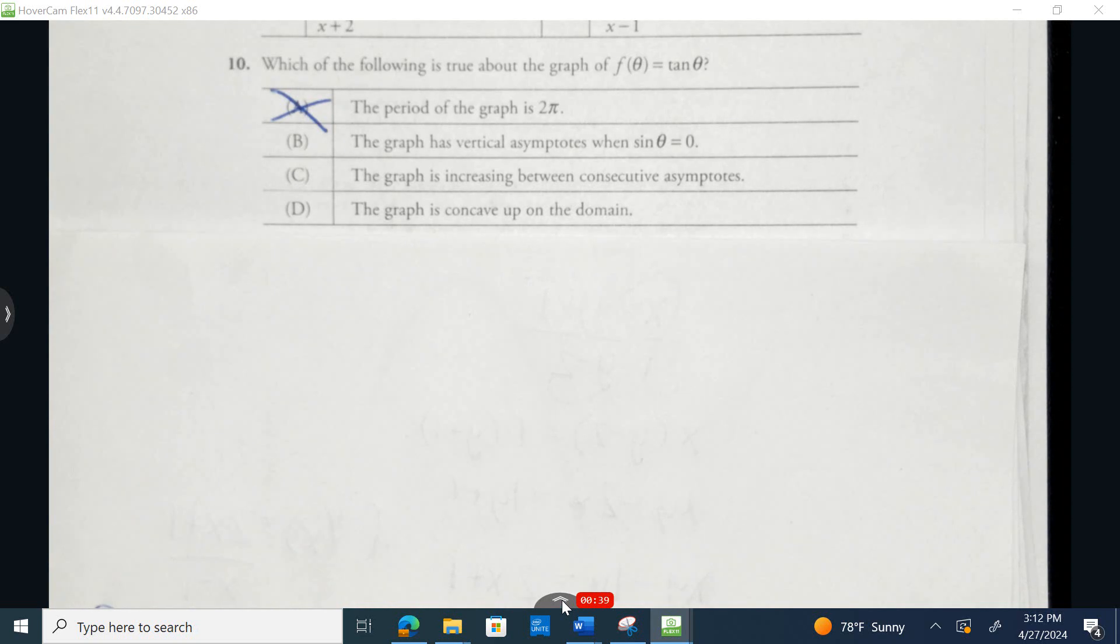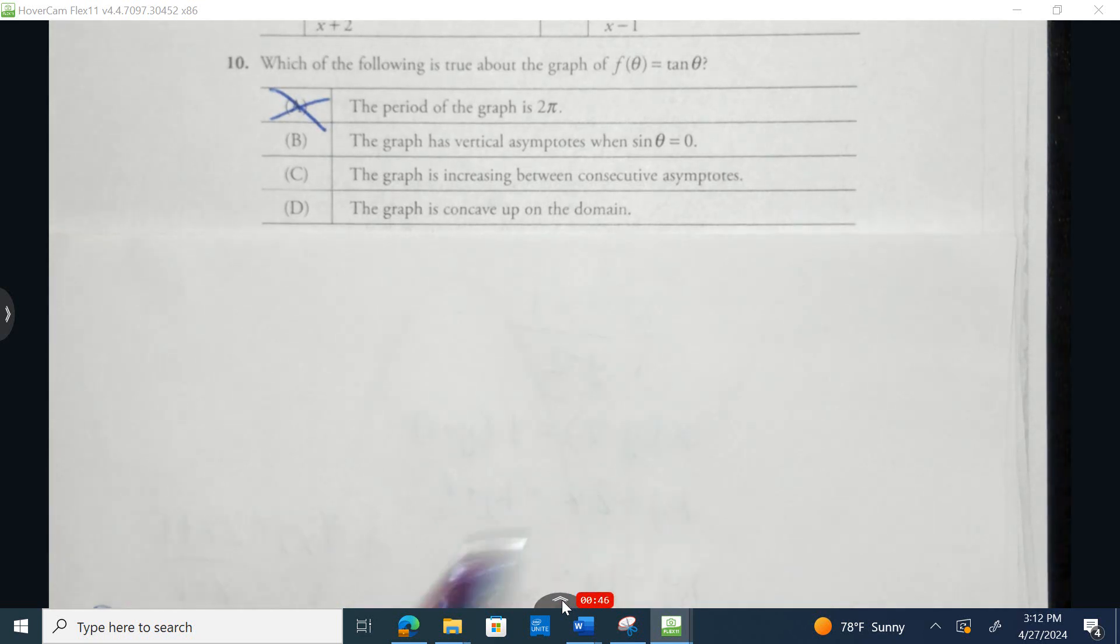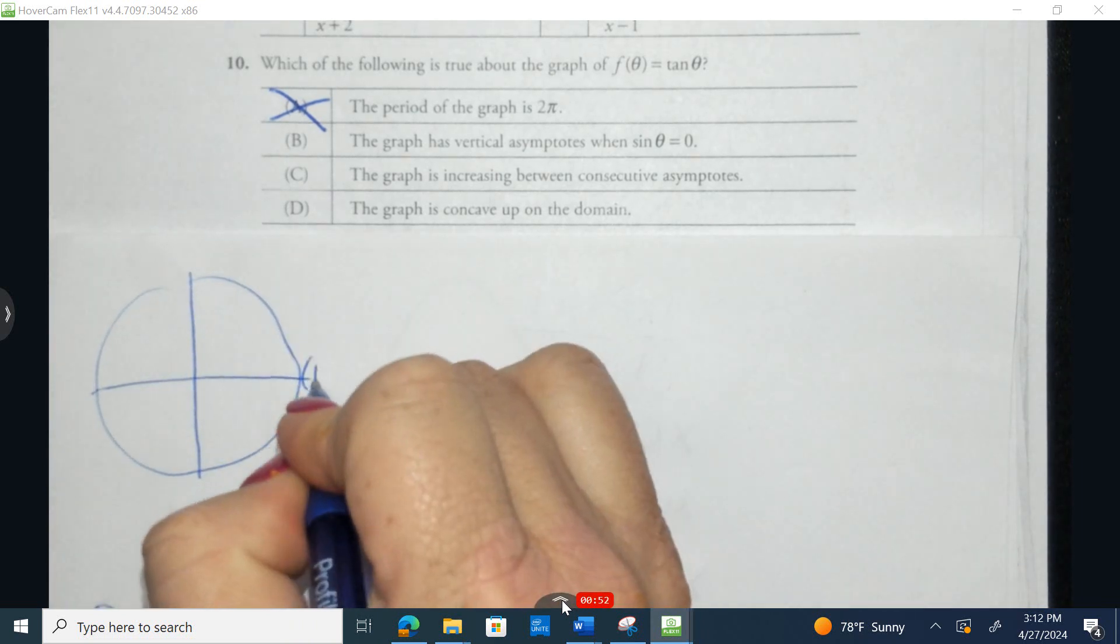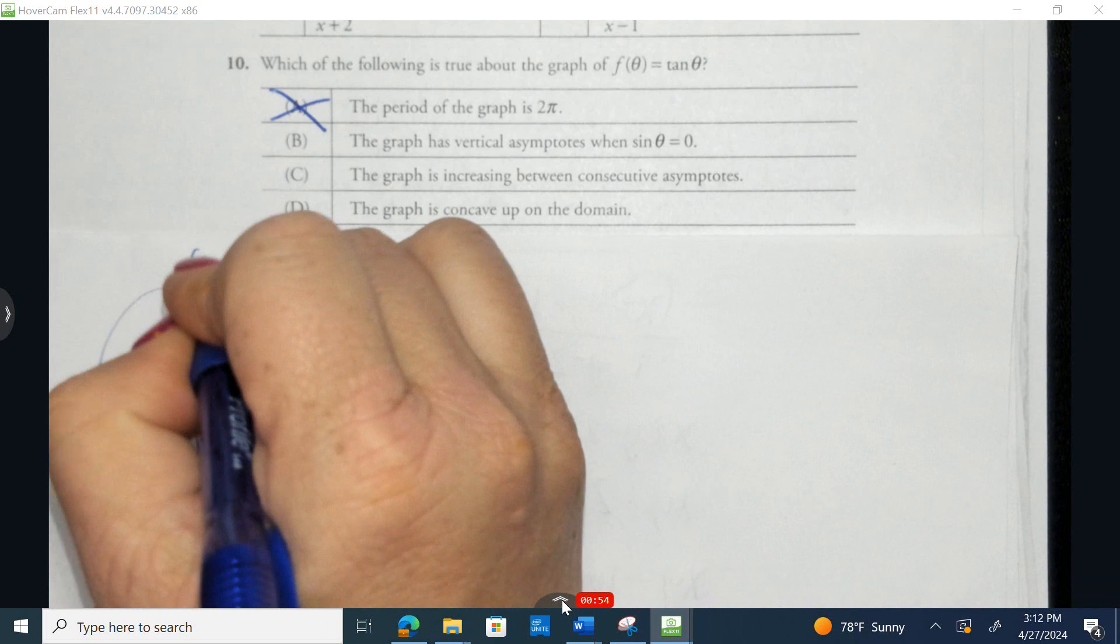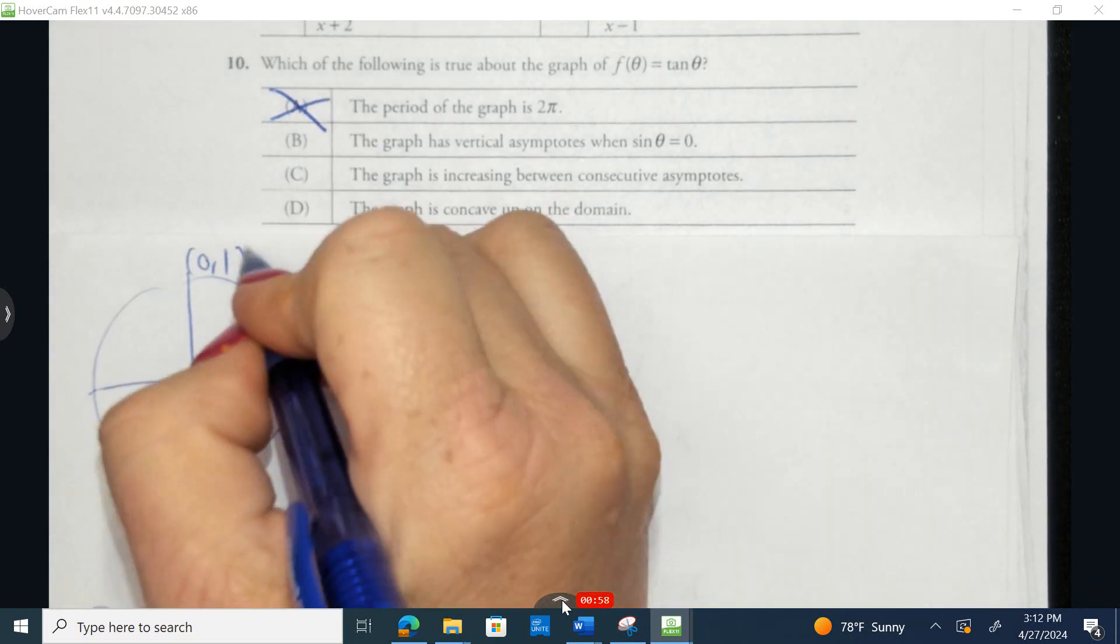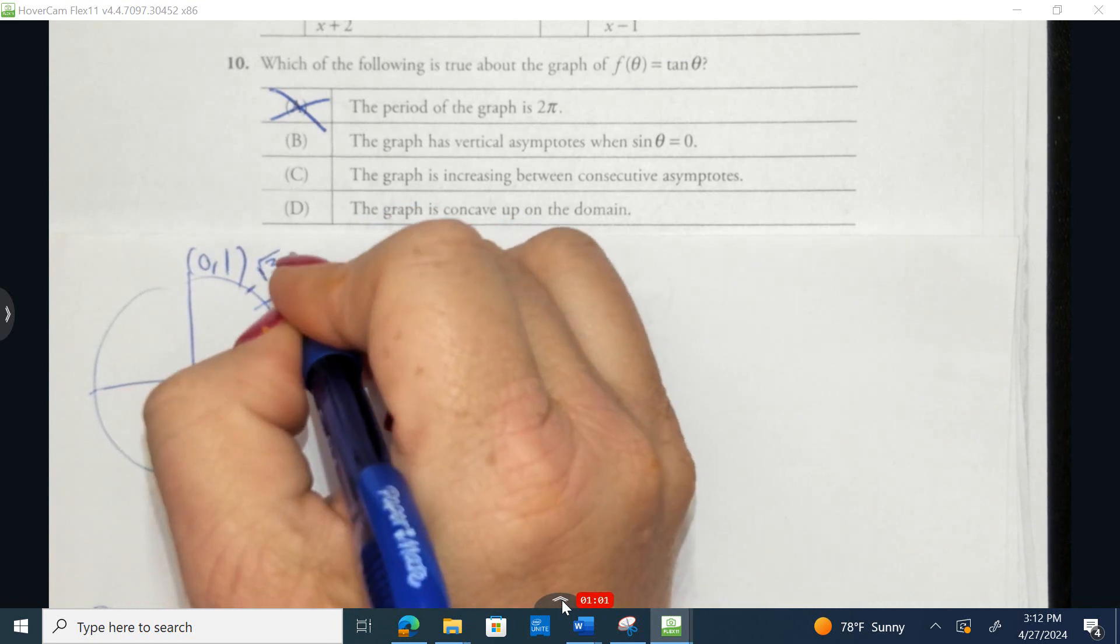The graph has vertical asymptotes when the sine of a function is equal to zero. Well, let's just first look at this really quickly. So, this is going to be (1,0), this is (0,1), and then when I think of these tangents at our three major points, at 60 degrees, it's √3, we've talked about 1.7.